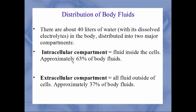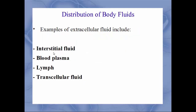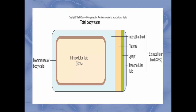These fluids are spread between two major compartments. The intracellular compartment — fluid inside the cells — is about 63% of all body fluids. The extracellular compartment — fluid outside the cells — is the other 37%. Examples of extracellular fluid include interstitial fluid, blood plasma, lymph, and transcellular fluid such as cerebrospinal fluid and synovial joint fluid found in knees and shoulders.